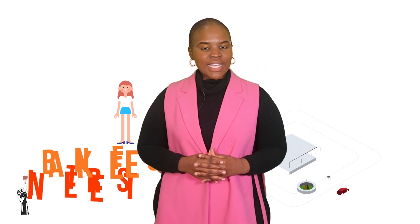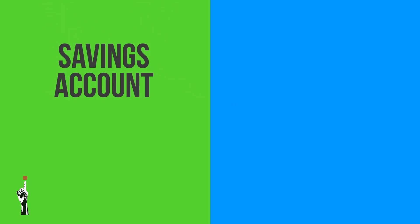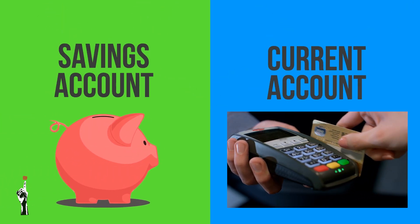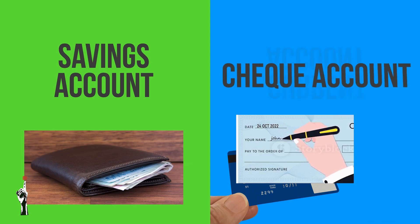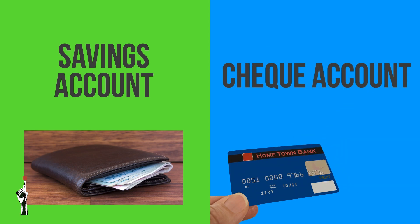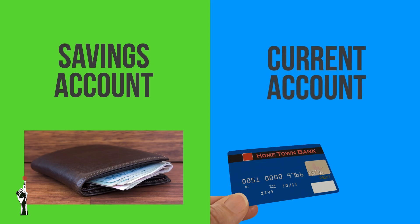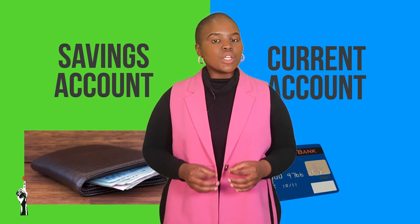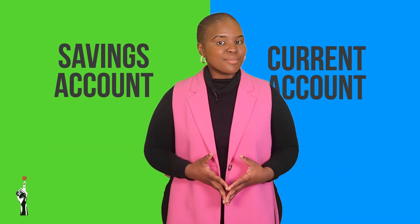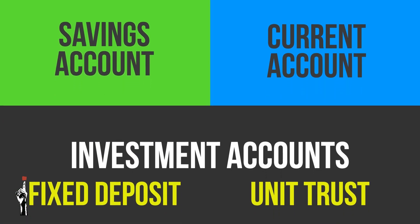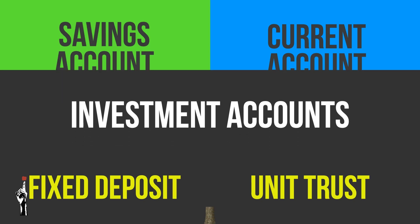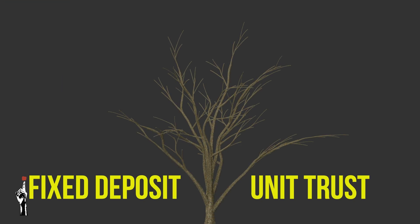We are now going to take a look at the different types of bank accounts. Let's take a closer look at two basic accounts that encourage savings: your savings account, as well as your current account. Both these accounts are for daily use and the cash is made available immediately. In the past, a current account was called a cheque account, but seeing that cheques don't exist anymore, the name has changed to a current account. Other accounts include investment accounts such as a fixed deposit and unit trust — with these investment accounts, you will receive more interest than your ordinary savings accounts.